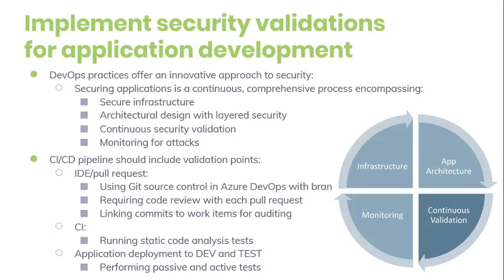After you have verified your code quality and deployed the application to a lower environment such as development or quality assurance, the process should verify that there are no security vulnerabilities in the running application. To test for this, you can execute automated penetration tests against the running application to scan for vulnerabilities. There are different levels of tests, which are categorized as passive tests and active tests. Passive tests run the target site as-is but don't try to manipulate the requests to expose additional vulnerabilities. This type of test runs fast and is usually a good candidate for a CI process that you want to complete within a few minutes.